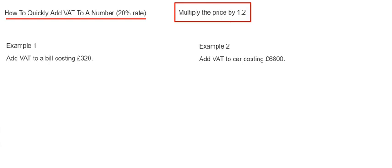Hi guys, welcome back, this is Maths 3000. Today I'm going to show you how to quickly add VAT onto a number. That's assuming that the VAT is at 20%, which it has been for the last few years. The quick way to do this is to just multiply the number by 1.2.